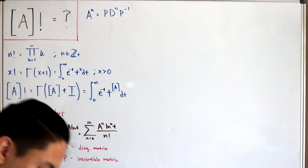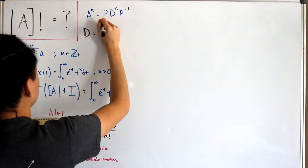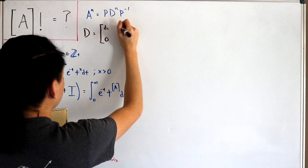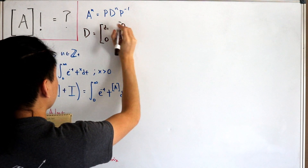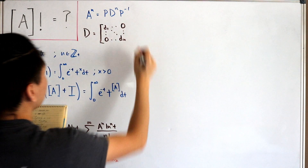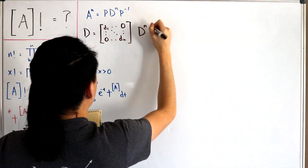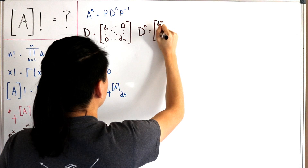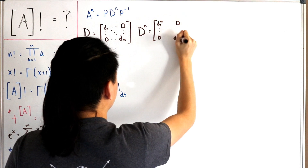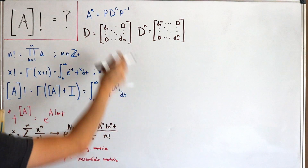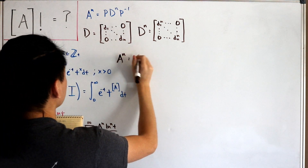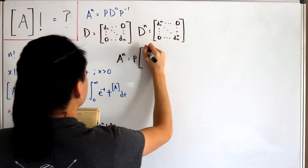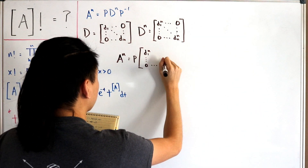The diagonal matrix D has entries d sub 1, d sub 2, ..., d sub n along the diagonal and zeros elsewhere. When we raise D to the power n, we simply raise each diagonal entry to the power n: d sub 1 to the power n, ..., d sub n to the power n, with zeros off-diagonal. Substituting back, A to the power n equals P times the diagonal matrix with entries d sub i to the power n, times P inverse.